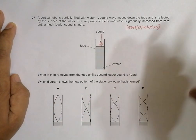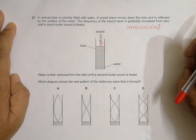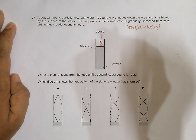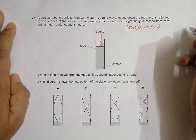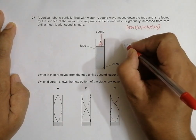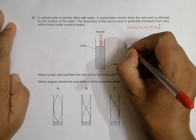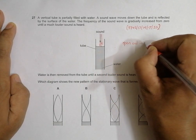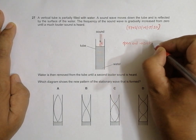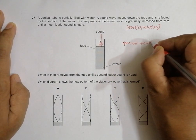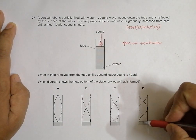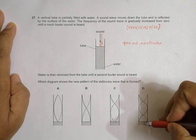We don't have to go too deep into this. The key thing to remember is that in any pipe instrument, at the open end there should be antinodes — meaning the vibration is highest. Sound does not come through the water end because it gets absorbed, so it must come through the open end.